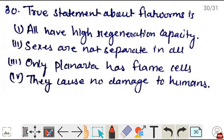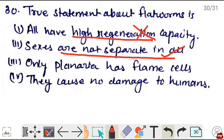Last question, true statement about flatworms is - all have high regeneration capacity, this is wrong. Planaria's regeneration capacity is not present in other flatworms to the same extent. Sexes are not separate in all, this is true. In none of them are males and females separate - all Platyhelminthes are hermaphrodites. Only Planaria has flame cells, this is wrong, because flame cells for osmoregulation and excretion are present in all flatworms. They cause no damage to humans, this is also wrong, because Taenia solium, which is tapeworm, and Fasciola hepatica, that is liver fluke, cause damage to humans also. True statement is option 2.